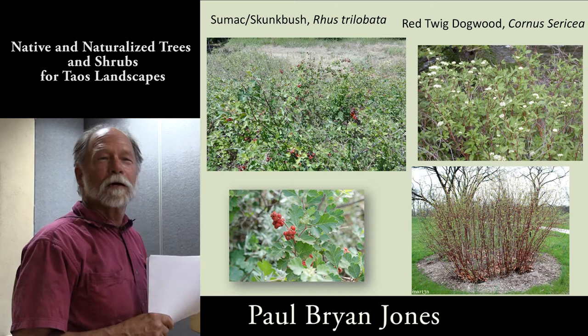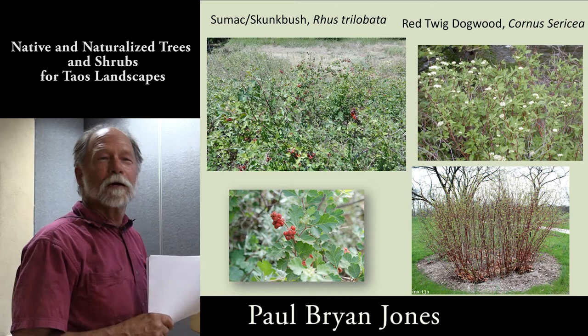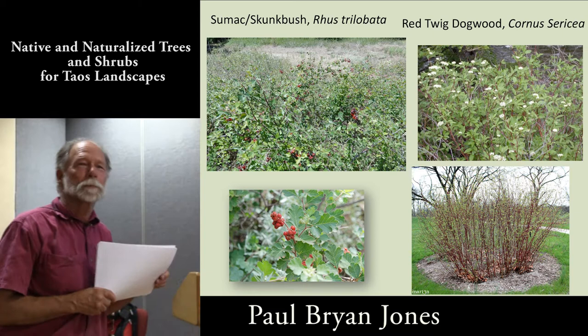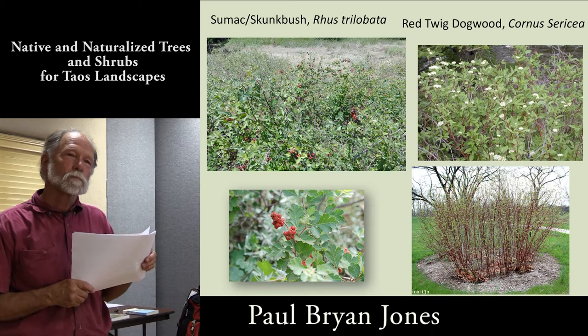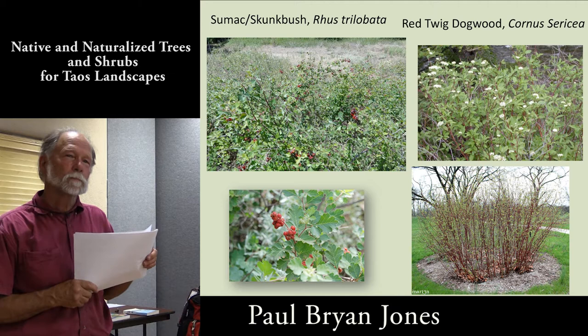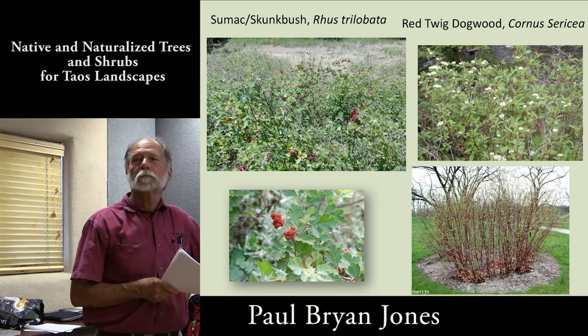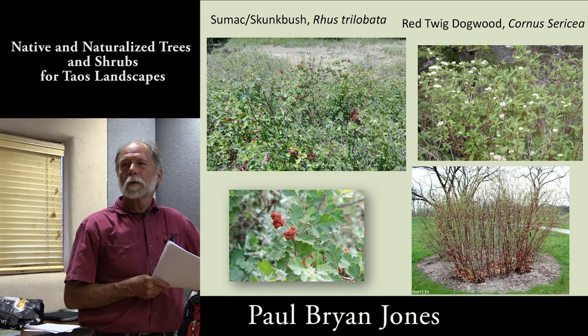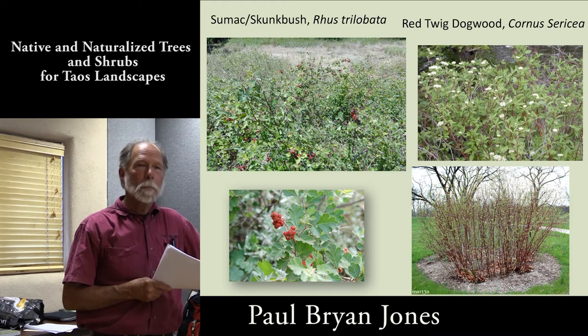Red twig dogwood is also called an osier — a common term; in fact it's a genus name for some willows. We have red willows too. The way the new twigs come up is red, so when they're bare you see that. The early namers called it a red osier — we have one in the Millicent Rogers Courtyard labeled as such — because they thought it was a willow, but it turned out to be a Cornus — red twig dogwood.